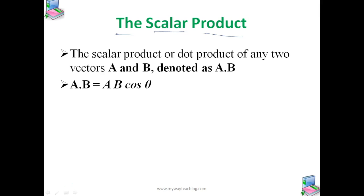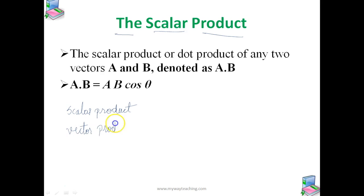There are two ways of multiplying vectors. The first one is known as the scalar product, which gives only the scalar form of two vectors. The other one is known as the vector product. When we multiply any two vectors, it will generate two kinds of terms: one is the scalar product and the other one is the vector product.